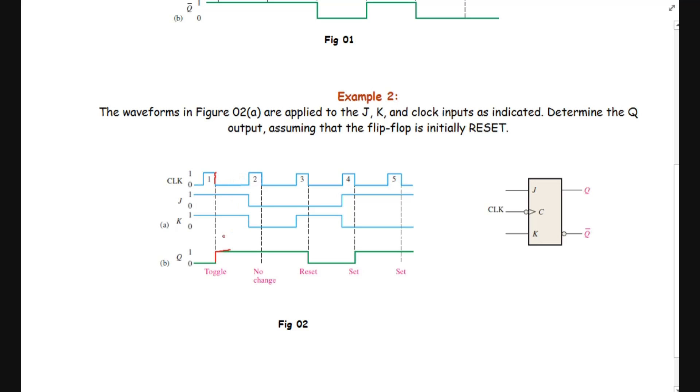It will remain high because we have a no change condition - there is no negative edge up to this place. We have another negative edge. Here J is equal to 0 and K is equal to 0. This state will be called a no change state. You can see from its function table that at J, K equal to 0, there will be no change in the previous condition.